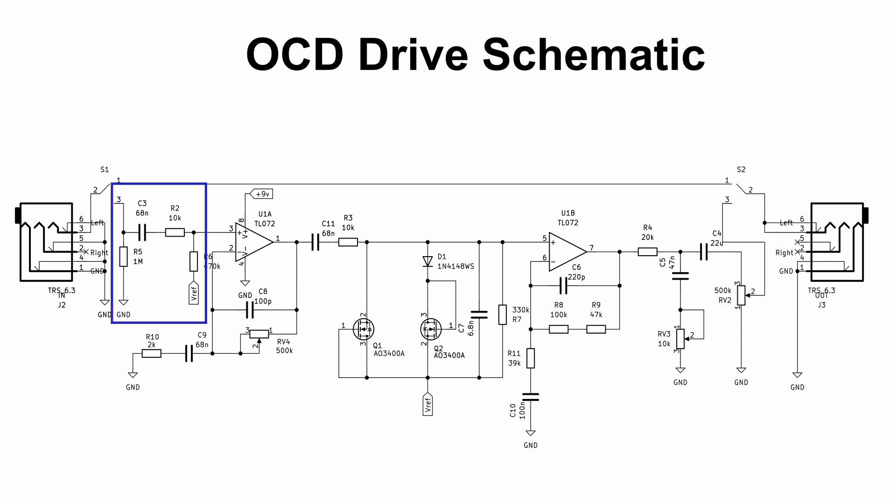The input stage filters and conditions the signal. The gain stage is non-inverting op-amp controlled by a potentiometer. The clipping stage uses MOSFETs connected as diodes, plus one actual diodes to create asymmetrical clipping. A low-pass filter follows removing harsh high-frequency sounds. And finally, a volume control potentiometer at the output.